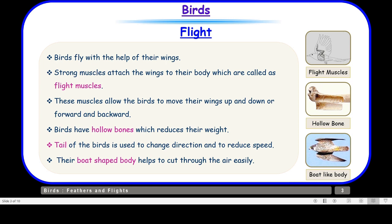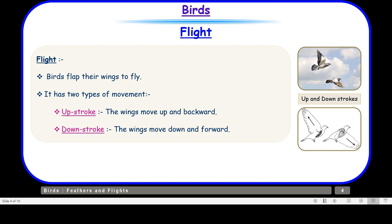Let us talk about the movement of wings. Birds flap their wings to fly, and there are two types of movements: upstroke and downstroke. When the wings move upward and backward, we call it upstroke. When the wings move downward and forward, we call it downstroke. As we can see in this diagram, during the downstroke the air is pushed backward and the body of the bird moves forward.